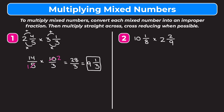Example 2 is 10 and 1 eighth times 2 and 2 ninths. We can't simplify either of the fraction parts, so we start by changing both mixed numbers into improper fractions. For the first one we multiply 8 times 10 which is 80, and add the numerator of 1 to get 81. Keep our denominator as it is, so we get 81 eighths. For the second fraction we do 2 times 9 which is 18, add the numerator of 2 to get 20, so we get 20 ninths.